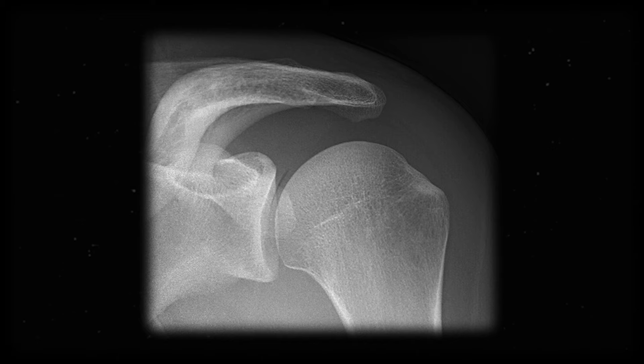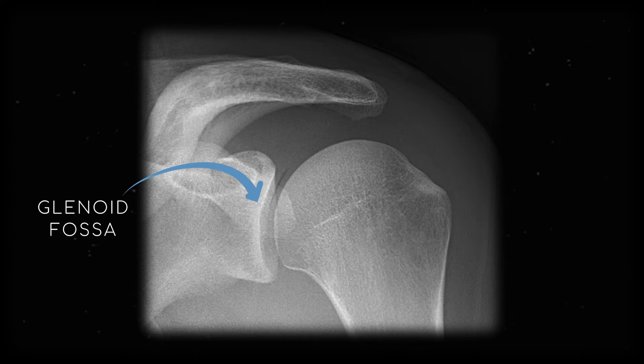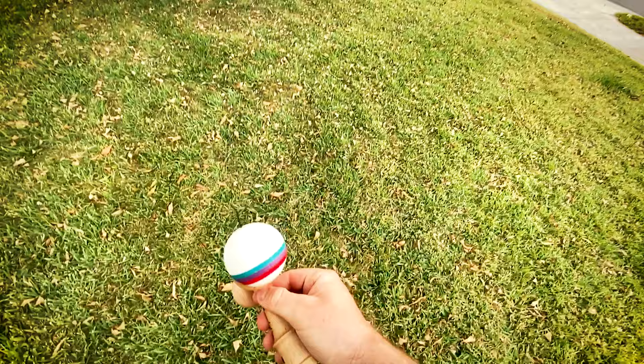Within the glenohumeral joint, the ball of the humeral head sits in the concave socket of the glenoid fossa. Fossa just means any kind of dip in the skeleton, and this isn't a huge dip — it's more like a golf tee than a kendama.